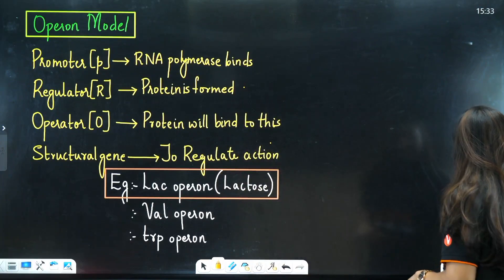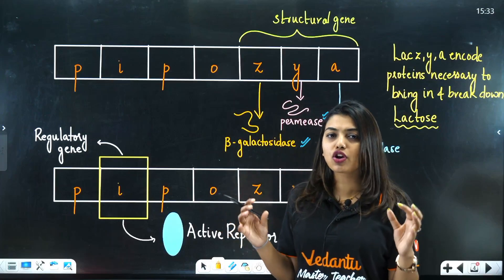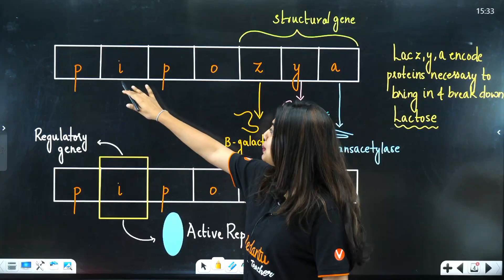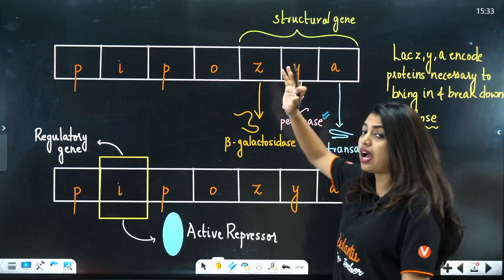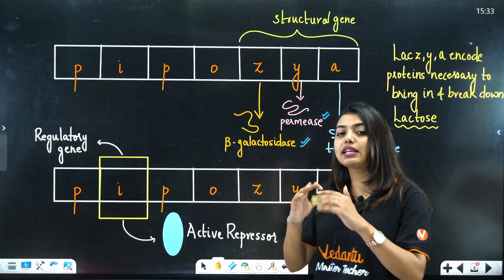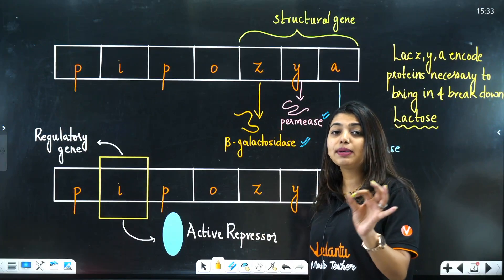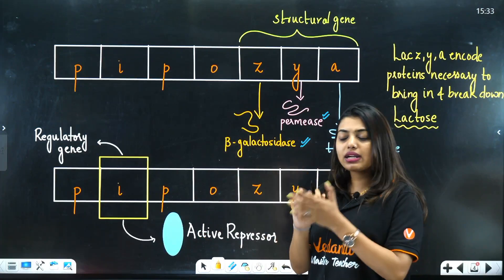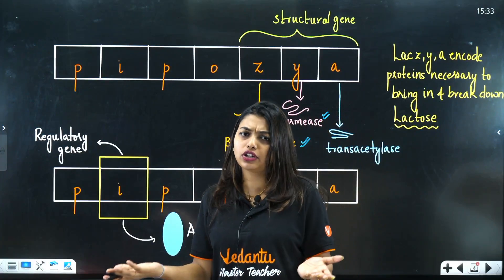From the name 'lac' you can understand it is related to lactose. The lac operon is remembered using the mnemonic P-I-P-O-Z-Y-A. The Z, Y, and A are the structural genes. The Z gene codes for beta-galactosidase, which breaks down lactose into galactose and glucose. We are talking about a prokaryotic bacterium — E. coli.